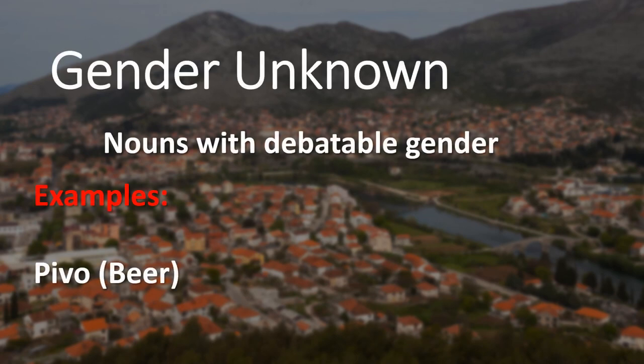There's one example of a word whose gender is debated. Some people call it masculine, some feminine, and others call it a neuter noun — so whatever you say will be right. That word is pivo, meaning beer.